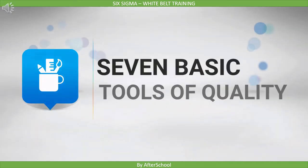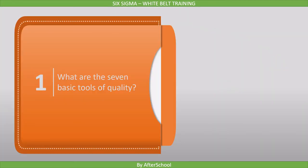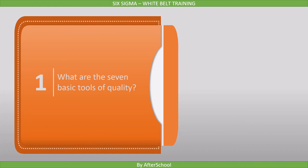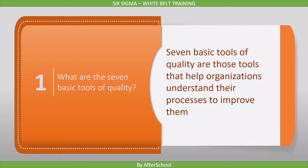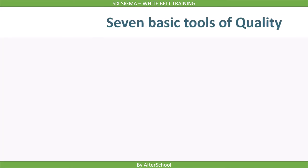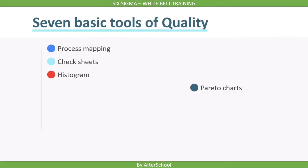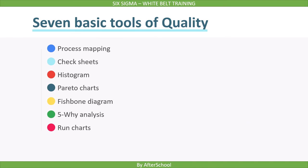In this lecture we will cover the seven basic tools of quality. The seven basic tools of quality are those tools that help organizations understand their processes to improve them. These are the seven basic tools of quality: process mapping, check sheets, histogram, Pareto charts, fishbone diagram, 5Y analysis, and run charts.